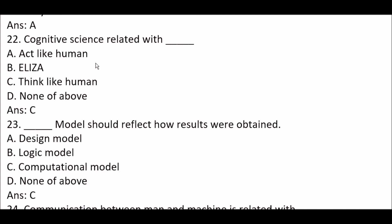Next question: cognitive science is related with blank space. Option A: act like human. Option B: ELIZA. Option C: think like human. Option D: none of the above. The right answer is Option C — cognitive science is related with thinking like humans.